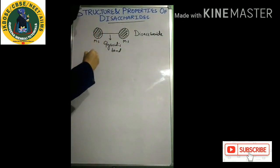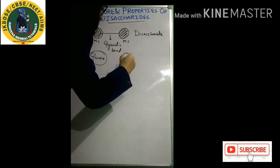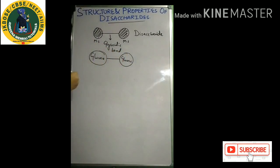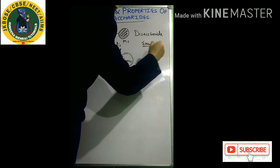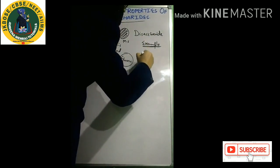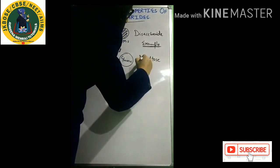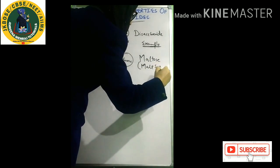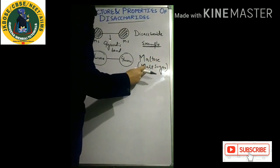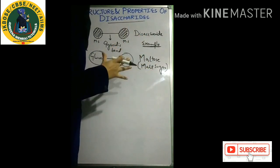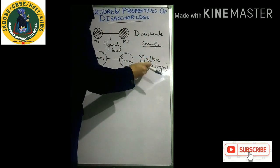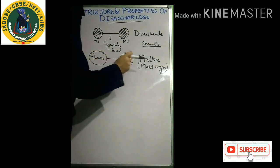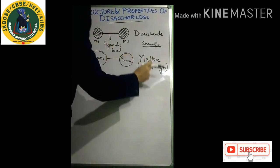Let me give you an example. Suppose this sugar is glucose and I'll take another sugar also as glucose, and we'll join these two glucoses with the help of a glycosidic bond — this will become a disaccharide. This disaccharide is maltose. Maltose is also called malt sugar. Malt is basically barley seeds which are partially germinated. Once you partially germinate barley seeds you get malt, and in that malt this sugar is present in more concentration. That's why it's also called malt sugar.